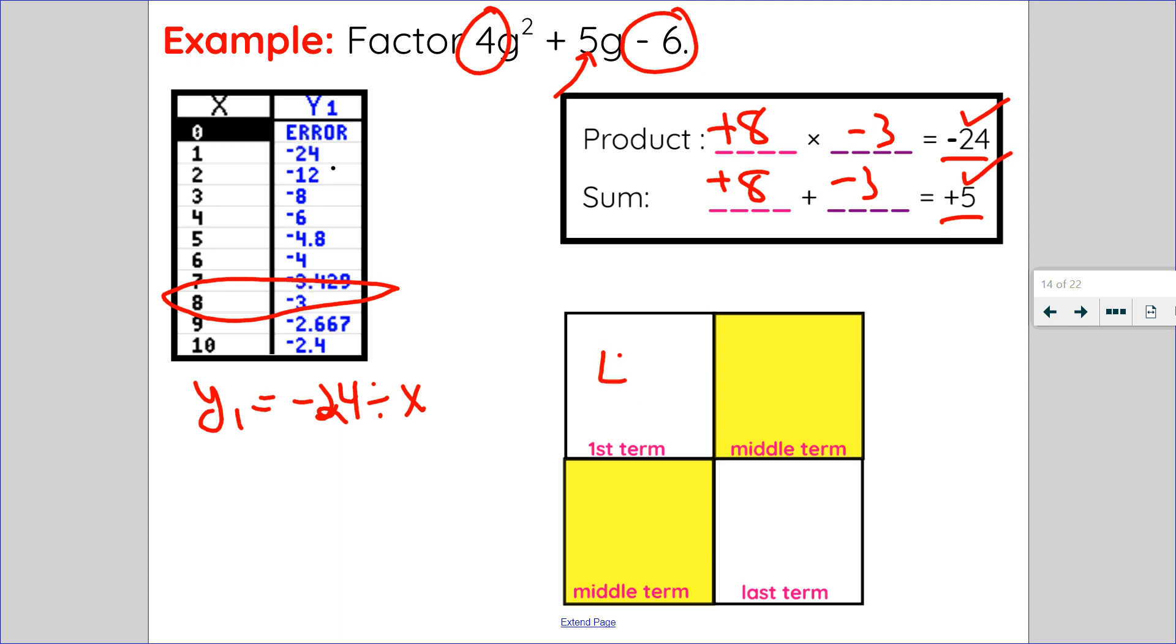So first term goes in the first box, last term goes in the last box, and my two factor pairs go in the remaining two boxes in any order.